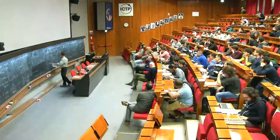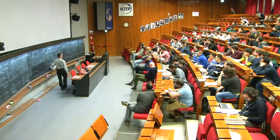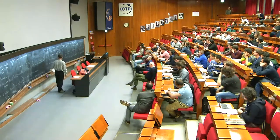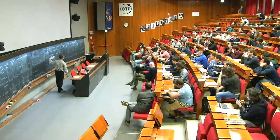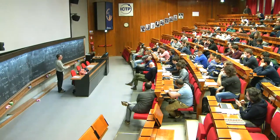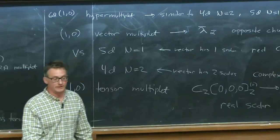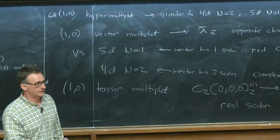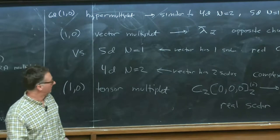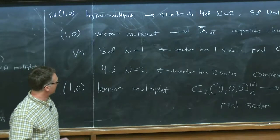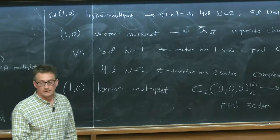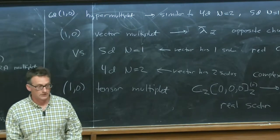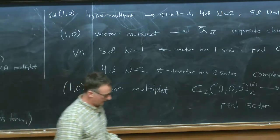By contrast, the tensor multiplet is conformally invariant. Note that both the tensor multiplet and the vector multiplet, when reduced down to five dimensions, become five-dimensional vector multiplets. But in six dimensions they are distinct.